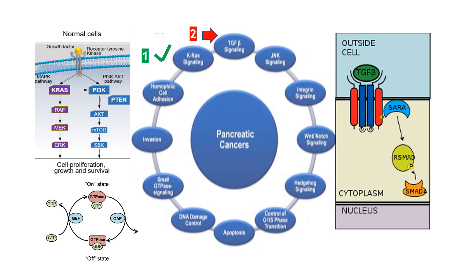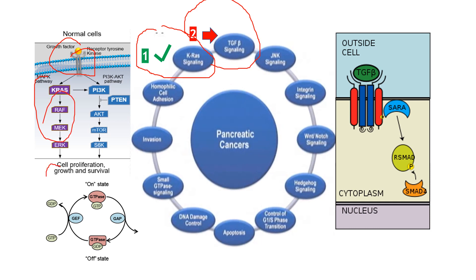We finished in the previous video talking about RAS signaling and now we're going to talk about TGF-beta signaling. It's the same idea — in RAS you have a signal, you have a transduction of the signal, and it leads to a response that many times is just a change in transcription.